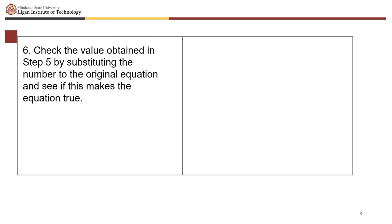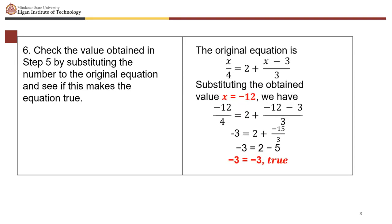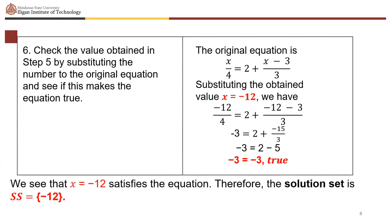Check the value by substituting x equals negative 12 into the original equation. We get negative 12 over 4 equals 2 plus (negative 12 minus 3) over 3, which is negative 3 equals 2 plus negative 15 over 3, giving negative 3 equals negative 3. This is true, so the solution set is {negative 12}.